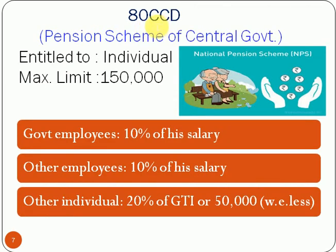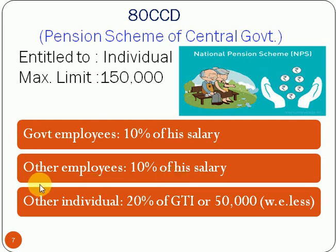Next is Section 80CCD. This deduction is related to investment in the pension scheme of the central government, like NPS — National Pension Scheme. The assessee entitled to this deduction is also individual only, and the maximum limit is Rs. 1,50,000. The deduction is limited to: for government employees, 10% of salary; for other employees, 10% of salary; or in case of other individuals who are not employees, 20% of GTI. These are the limits — 10% of salary for employees or 20% of GTI for other individuals, or Rs. 50,000, whichever is less.